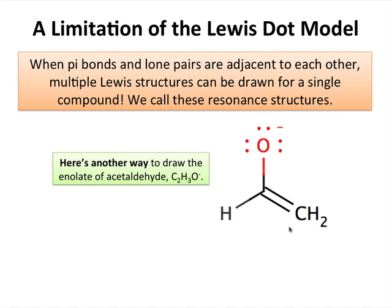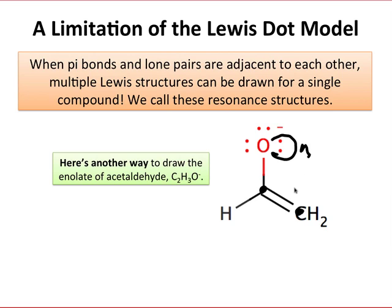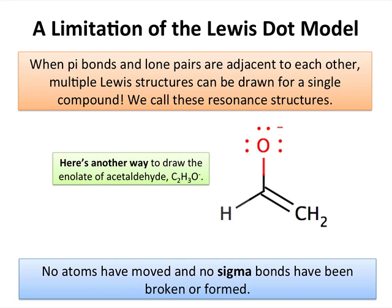Here's a second way to draw the enolate of acetaldehyde, where now, instead of drawing the double bond between the carbon and oxygen, we've drawn the double bond between the carbon and carbon, and placed the lone pair on the oxygen. In this case, the oxygen appears to possess an n-orbital, and there appear to be pi and pi-star orbitals between the two carbons. So the two Lewis structures appear to suggest two different sets of molecular orbitals — there's clearly something wrong here. To clarify: no atoms have moved and no sigma bonds have been broken or formed. These are two characteristics of resonance structures.